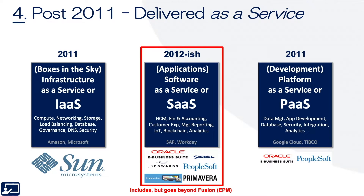Fourth topic: post-2011, delivered as a service. In the years immediately after 2011, the consolidation of Fusion's technologies went beyond just the software. All of Oracle's technologies were aligned with one of their three service lines: infrastructure, development, and applications. This diagram gives you an idea of what was aggregated into what service. For example, in infrastructure, the compute, networking, storage, load balancing, etc. services were all aggregated and they compete with Amazon or Microsoft.